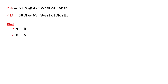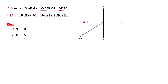First, we need to plot the graph of these vectors. For vector A, it is west of south, so therefore vector A lies on this quadrant. The given angle is 47 degrees. For vector B, it is west of north, so vector B lies on this quadrant.